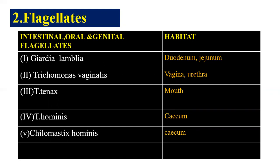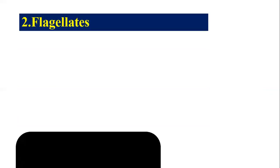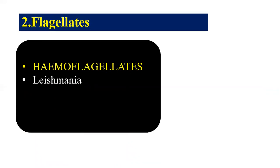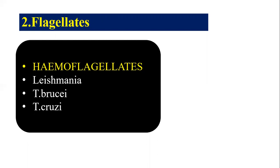Under flagellates, the next group is hemoflagellates — those which are present in the blood. Hemoflagellates include Leishmania. The important parasite is Leishmania donovani, which causes kala-azar disease. Next is Trypanosoma cruzi, which causes Chagas disease. These are the important parasites in hemoflagellates.